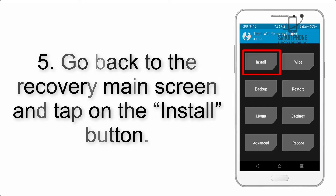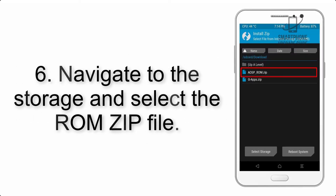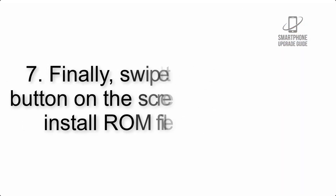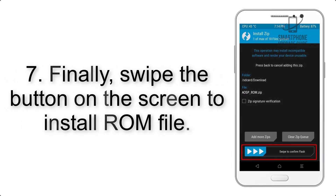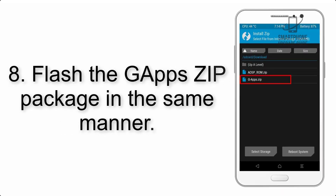Step 5: Go back to the recovery main screen and tap on the Install button. Step 6: Navigate to the storage and select the ROM zip file. Step 7: Finally, swipe the button on the screen to install the ROM file.